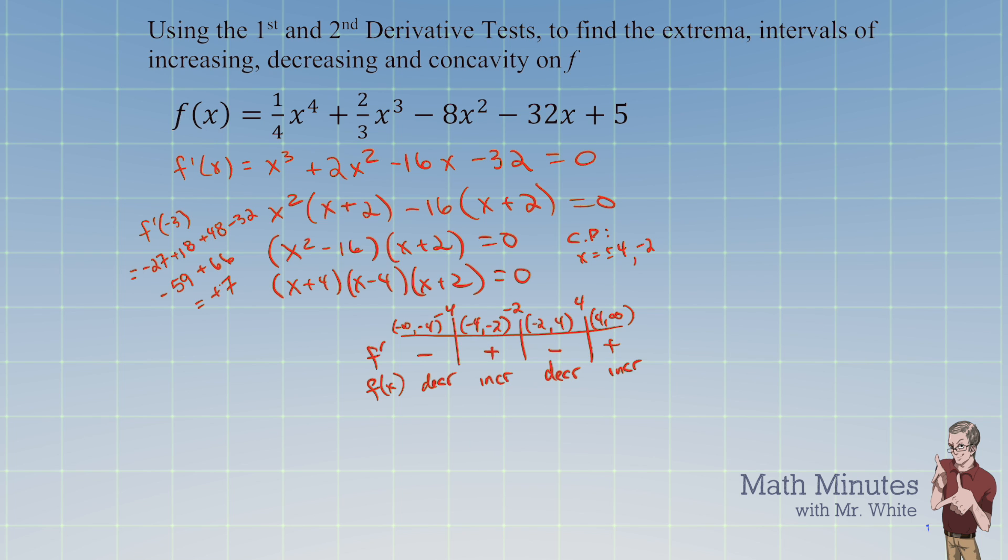This is a local min. We have a local min at x equals negative 4, but also another one at positive 4. So it's at plus or minus 4, because when you change from decreasing to increasing, you have a min. When you change from increasing to decreasing, that's a local max. So we have a max at x equals negative 2. We're going to confirm this with concavity before the end of the problem, but let's get that written down.